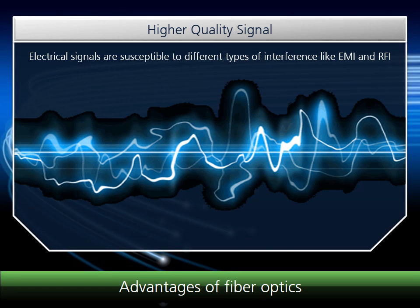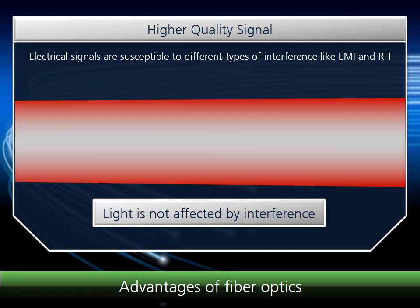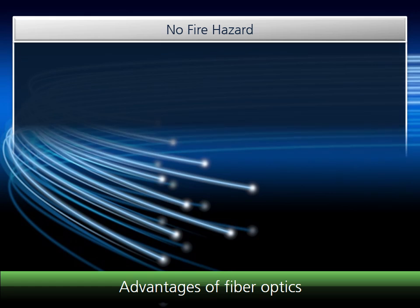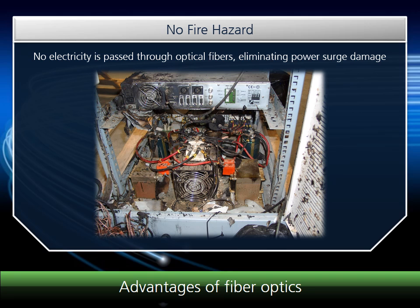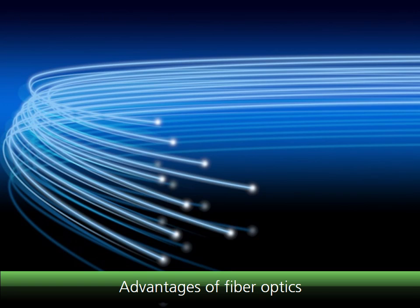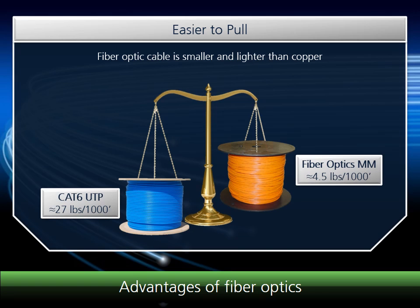Fiber optics also delivers a cleaner signal. Electrical signals over copper are susceptible to electromagnetic and radio frequency interference, which negatively affects performance and reliability. Because fiber uses light and not electricity, the signal is not affected by interference of any kind. Fiber optics also removes a potential fire hazard, as lightning strikes and electrical power surges can't travel over fiber. And fiber is easier to pull because of its smaller size and lighter weight, saving time and energy when wiring an entire home or building.